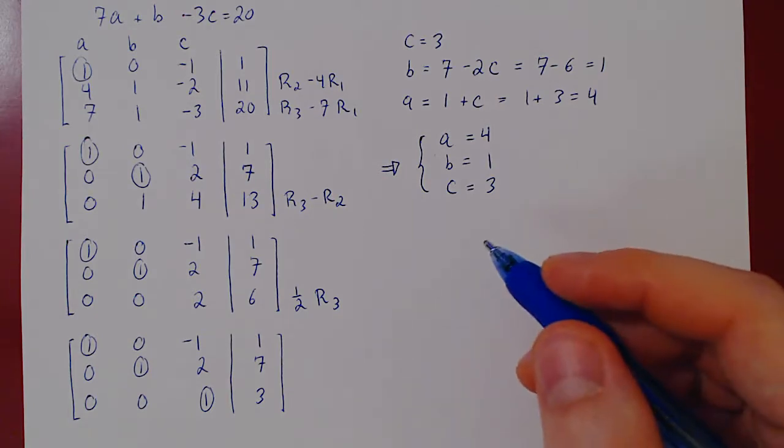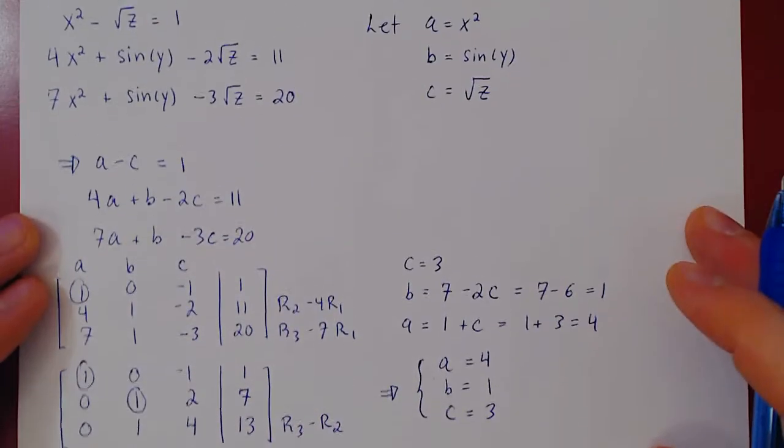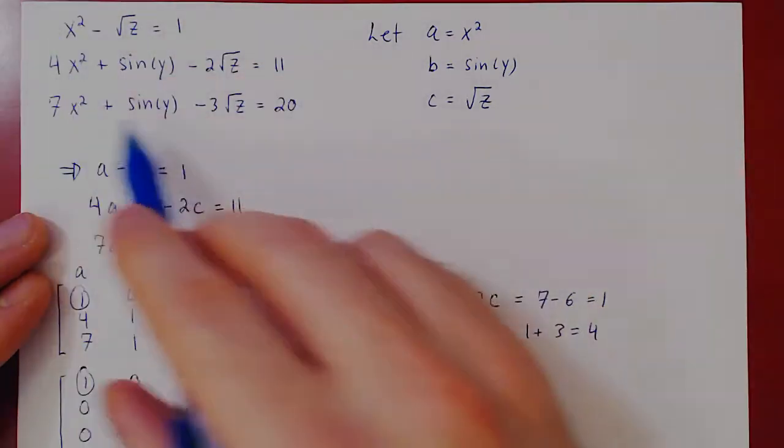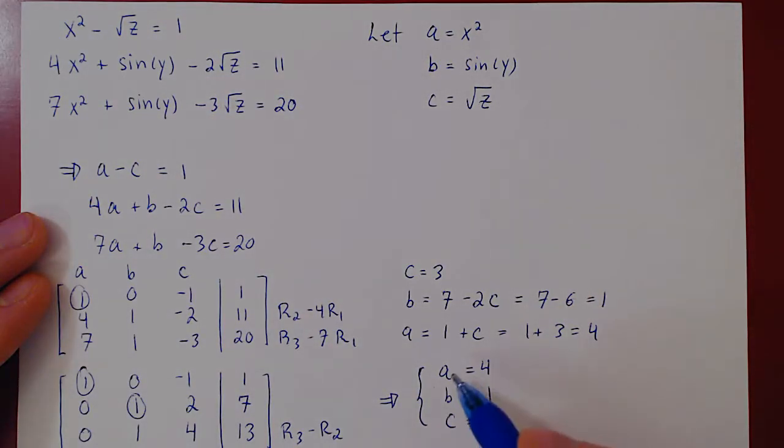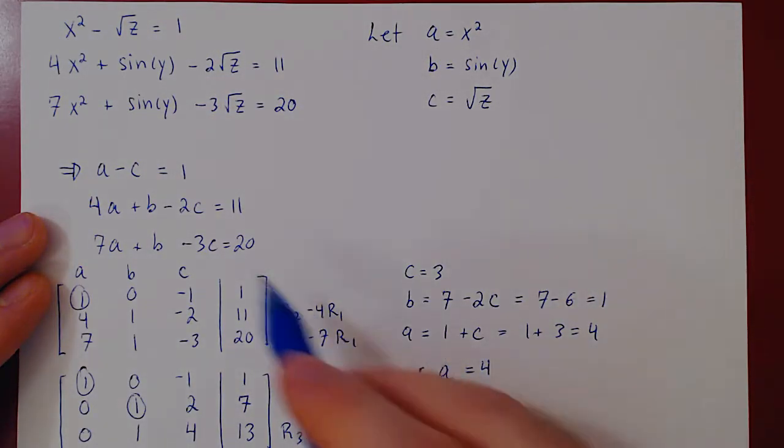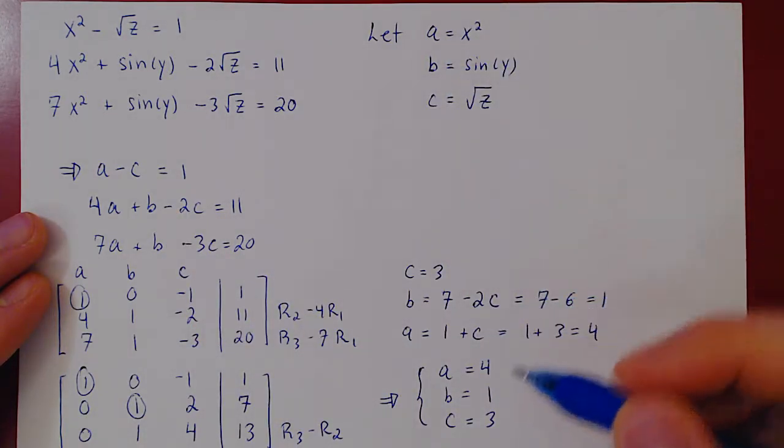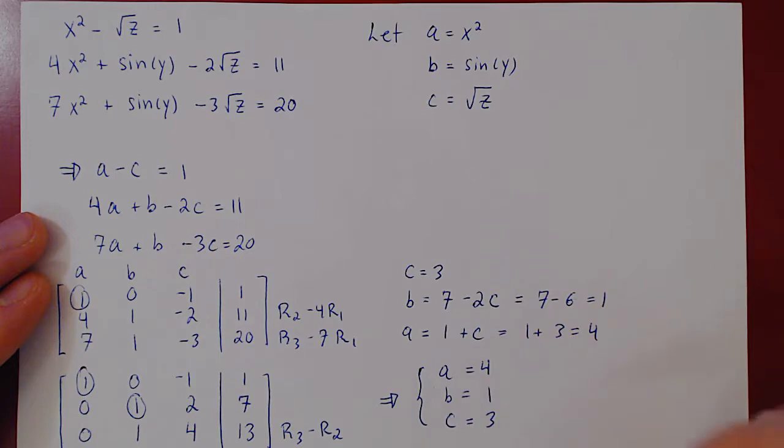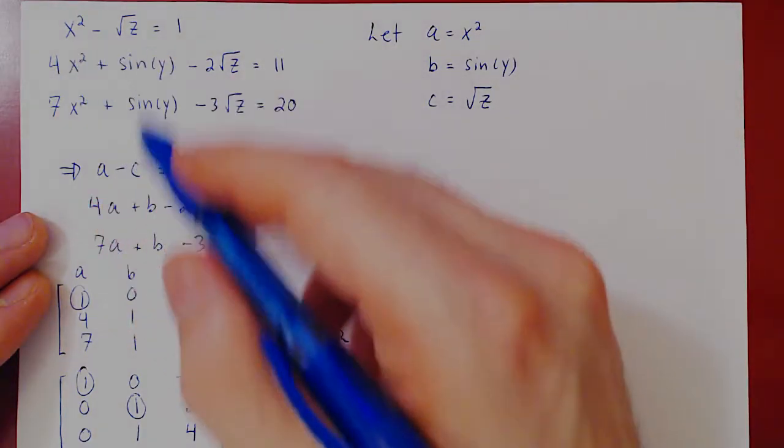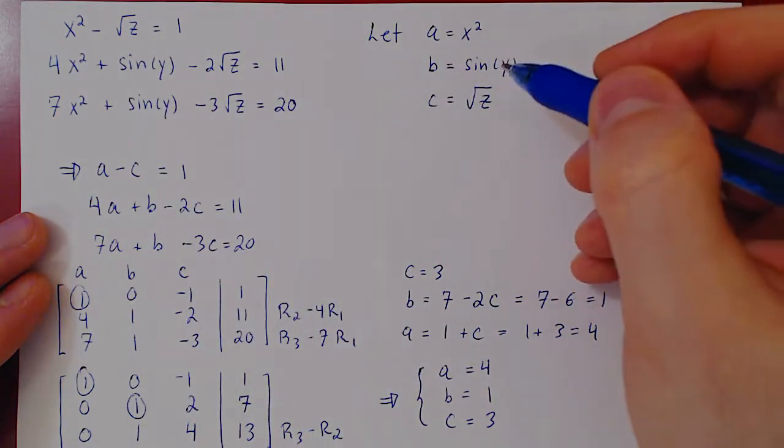But don't lose track of what the question was. We were trying to solve the original non-linear system. What we have now solved is the linear system that we have obtained after making our change of variables. So we now have to find a way to solve back for the original variables, that is, for x, for y, and for z.